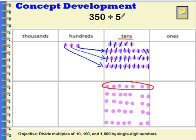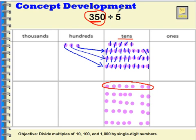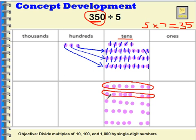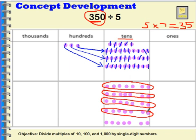So when I divided 350 by five, I had to regroup — I had to unbundle or decompose the hundreds into tens. I ended up with 35 tens, then divided the 35 tens into five groups and got seven in each group. Looking at it another way: 350 is 35 tens, and five times seven equals 35. So five times seven tens equals 35 tens, and 35 tens is 350.